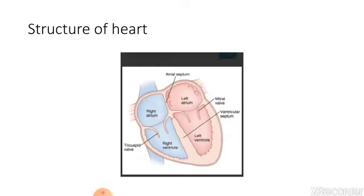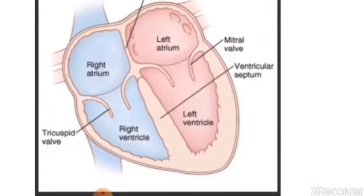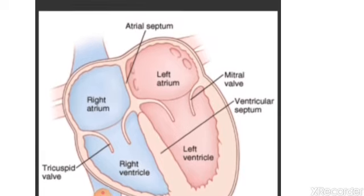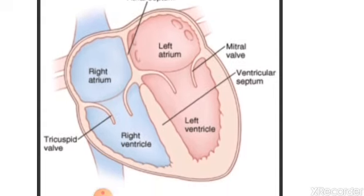Now we will study about the structure of heart. The heart has four chambers. Two upper chambers and two lower chambers. The two upper chambers are called auricles or atrium. And the two lower chambers are called ventricles. You can see in this picture, the four chambers of our heart. Four parts of our heart. Two upper portion and two lower portion.